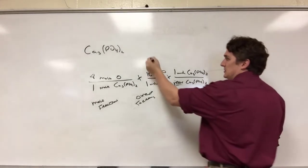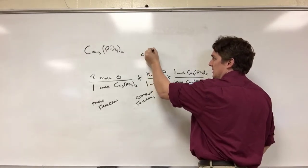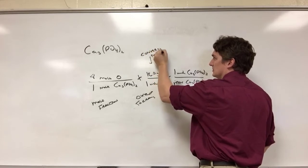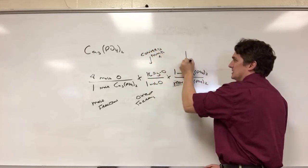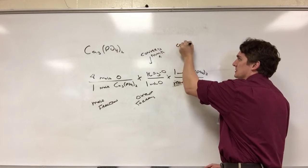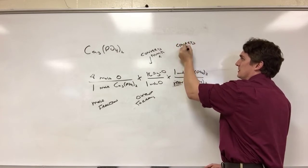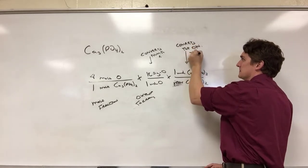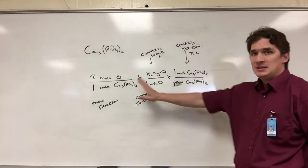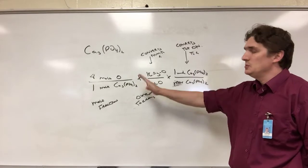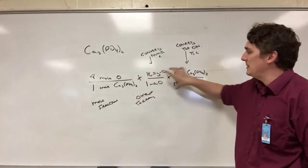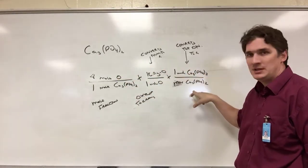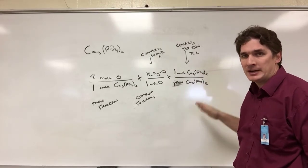So first conversion factor converts the numerator to grams. Second conversion factor converts the denominator to grams. At this point you are done. All you have to do is multiply through. Take your mole fraction multiply by your two molecular weights one over the other and this will get you a weight fraction.